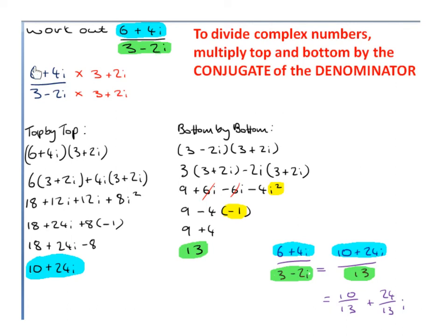Starting with the numerator: (6 plus 4i)(3 plus 2i). Expanding: 6 by 3 is 18; 6 by 2i is 12i; 4i by 3 is 12i; and 4i by 2i is plus 8i squared. Bringing it together: 18, then 12i plus 12i is 24i, and i squared becomes minus 1, so 8 times minus 1 is minus 8. Then 18 minus 8 is 10, and we bring down the 24i. So the numerator is 10 plus 24i.